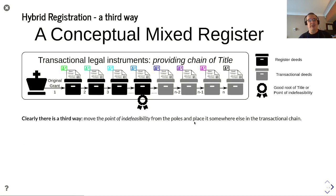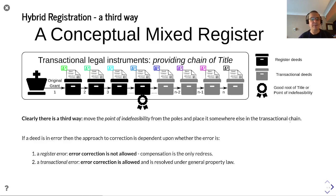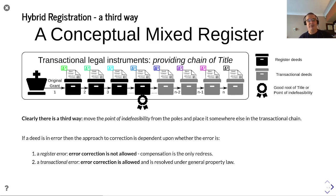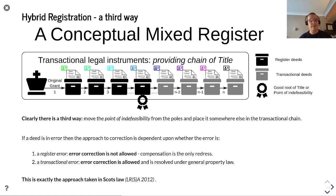What about a third way? What happens if you can change the position of your good root of title — moving that point of indefeasibility from the poles and placing it somewhere else in the transactional chain? If a deed is in error, the approach to correction is dependent upon whether the error is a register error — where error correction is not allowed and compensation is the only redress — or a transactional error, where error correction is allowed and is resolved under general property law. This is exactly the approach taken in Scots law.